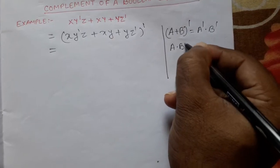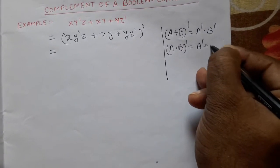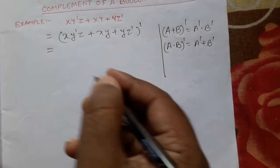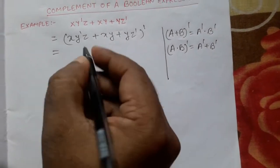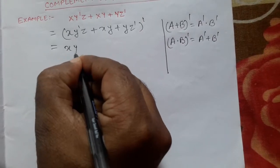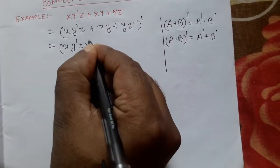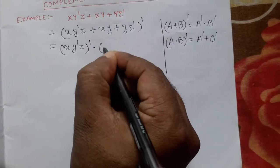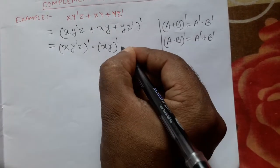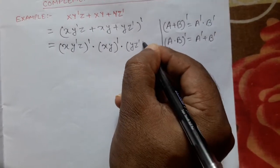The second law says A into B whole complement will become A-complement plus B-complement. That is called De Morgan's theorem. Following De Morgan's theorem, x y-complement z whole complement, into x y whole complement, into y z whole complement.